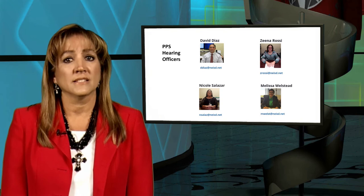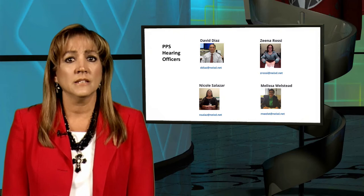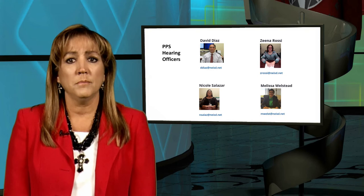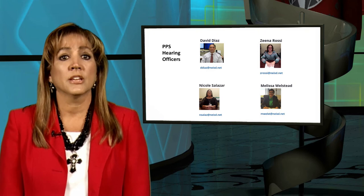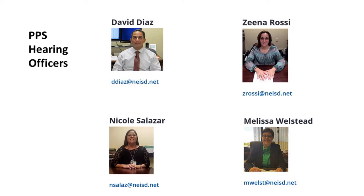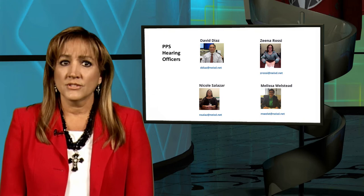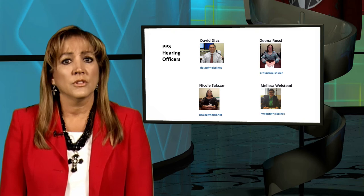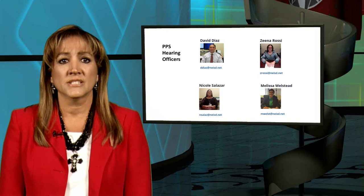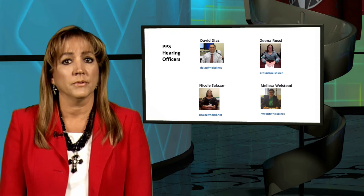Once the campus assistant principal has investigated and found that the preponderance of evidence shows that the student is in violation of the Student Code of Conduct, and the behavior meets the standard for a DAP placement, he or she should inform the principal who must concur with the outcome and the referral. Contact should be made with your designated hearing officer to provide all information gathered before making a call to the parent, so that your hearing officer can be of any assistance and be prepared for your final call to establish an office referral and set an appointment for an evidentiary discipline conference at PPS.